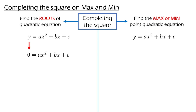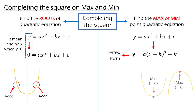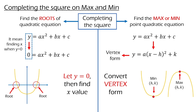When we use completing the square to find the roots, we let y equal to 0, meaning we find the x-coordinate when y equals 0. On the other hand, when finding the maximum or minimum point of a quadratic equation, what we are doing is converting the equation into vertex form. The key difference is: finding roots means letting y = 0, while finding max/min means converting to vertex form.